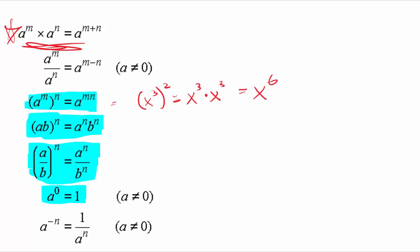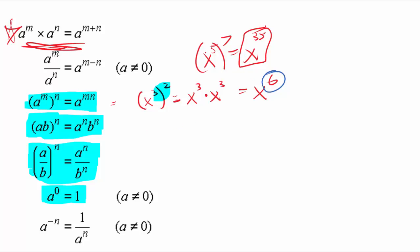That would be the long way of doing it. The shortcut is: if we have a power raised to a power, we can just multiply the exponents. Three times two gives us the exponent of six. Another example: x to the fifth to the seventh power equals x to the 35th power. The key is to multiply the exponents whenever we have a power raised to another power — different from the first rule we talked about in the last video.